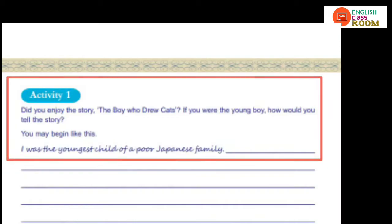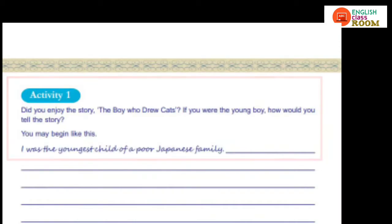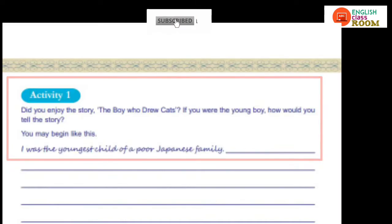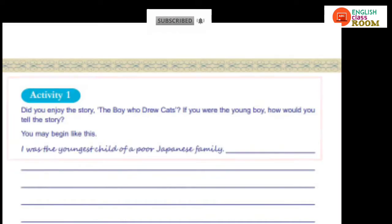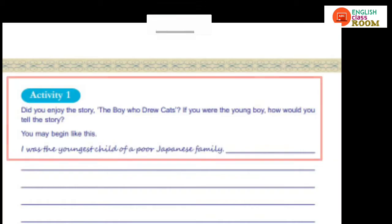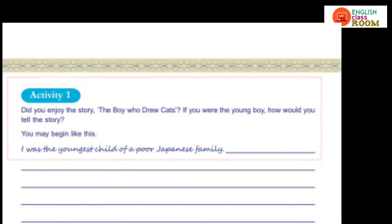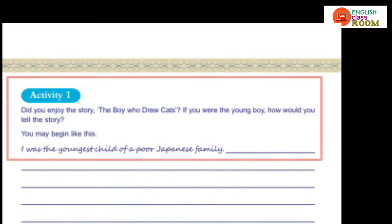The main character is the boy, and the story uses first-person narration. In first-person narration, the story is told as 'I,' whereas in third-person narration it would be told as 'he' or 'she.' Here, the writer tells the story through the boy's perspective.